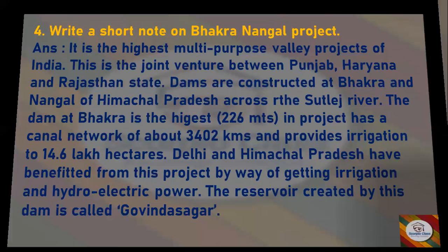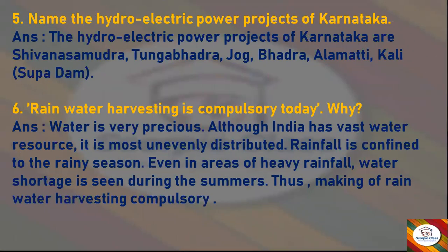Next question: Name the hydroelectric power projects of Karnataka. Answer: The hydroelectric power projects of Karnataka are Shivanasamudra, Tungabhadra, Jog, Bhadra, Alamatti, and Kali (Super Dam).